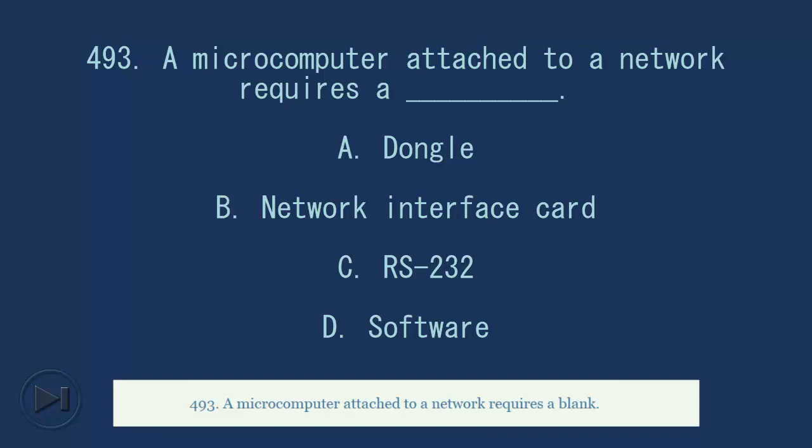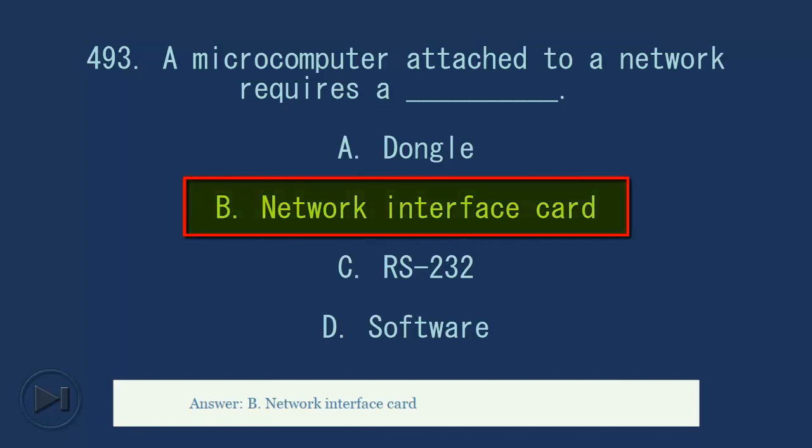493. A microcomputer attached to a network requires a blank. A. Dongle. B. Network interface card. C. RS232. D. Software. Answer, B. Network interface card.